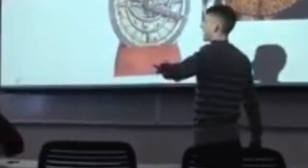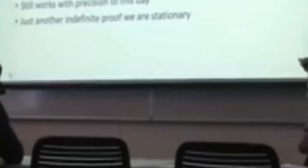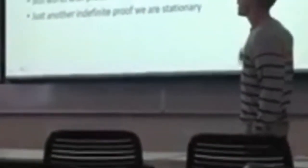Next thing I want to introduce today is the astrolabe. The astrolabe, I don't really want to get into too much because it'll take all class. The early astrolabe was invented in 220 B.C. Greek first star taker, it's a clock, it's an animation device, it's a calculator capable of working out several different equations, but the main part I want to base about this is that it bases its positioning off the north star, still works with precision to this day. Just another indefinite proof that we are a stationary plane.